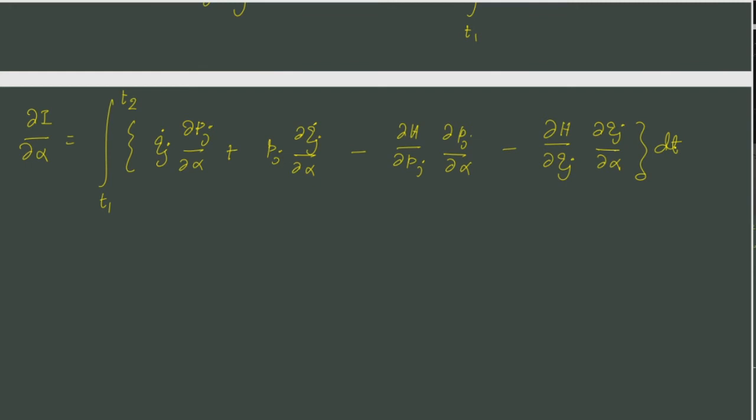Once that is done we would like to carry out this similar procedure that we did before. So we take the partial derivative of the integral and we can push the partial derivative in and we get it. The last two terms are essentially the chain rule on the Hamiltonian.